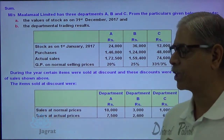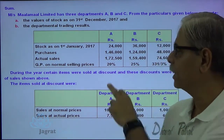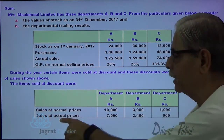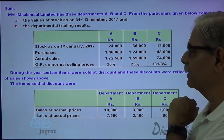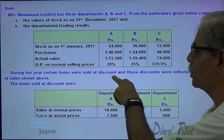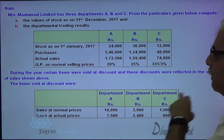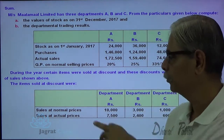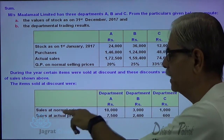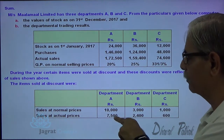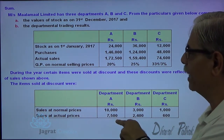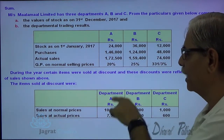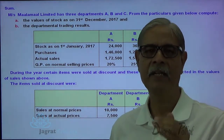But these percentages of profit are not strictly followed. If the percentage of profit is being followed, then the sales at the normal price would have been 10,000. But instead, the actual sales was made 7,500. During the year, certain items were sold at a discount and this discount was reflected in the values of sales shown. So if at 20% gross profit the sales has occurred, then the sales value would have been 10,000. But as the discount was given, the actual sales price was 7,500, and this 7,500 is a segment of this 1,72,500.